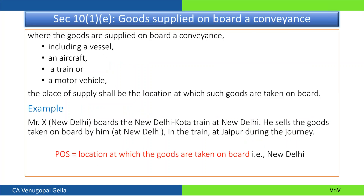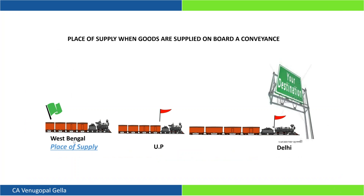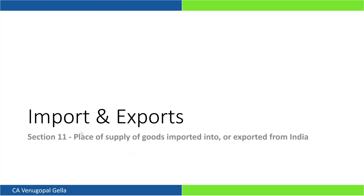Where goods are supplied on board a conveyance — vessel, aircraft, train, or motor vehicle — the place of supply will be wherever such goods are taken on board. For example, if a train is moving from West Bengal to Delhi, and books or gadgets are being sold in UP or Delhi inside the conveyance, the place of supply will be West Bengal, wherever the goods were loaded.